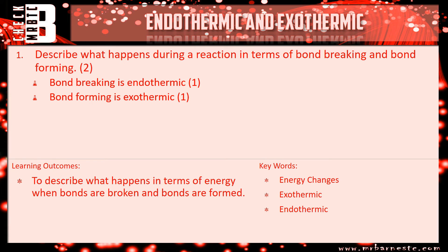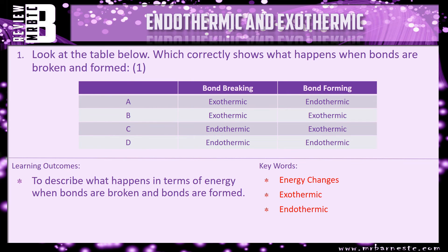That's this video done. There is a review question which is very similar. Look at the table below which correctly shows what happens when bonds are broken and formed. So A is bond breaking exothermic and bond forming endothermic. B exothermic exothermic. C endothermic exothermic or D endothermic endothermic.